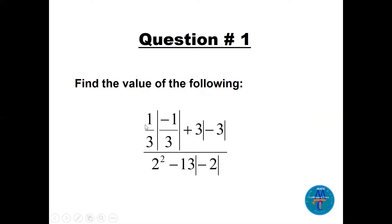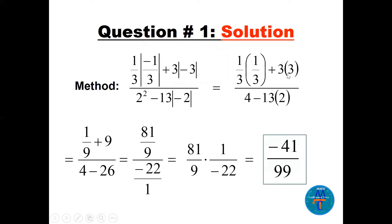To solve, find each absolute value: |−1/3| = 1/3, so (1/3) × (1/3) = 1/9. For 3|−3|, the absolute value of -3 is 3, so 3 × 3 = 9 — not 3 + 3 = 6. Many students make this mistake. The LCD is 9, giving 81/9 for the numerator fraction.